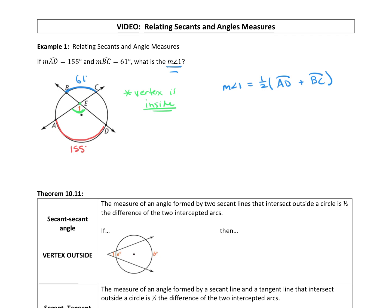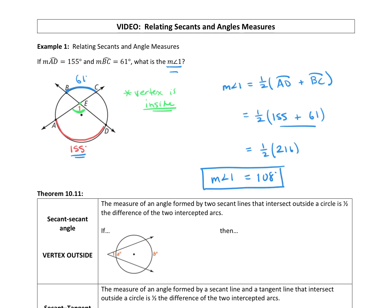Now let's plug in what we know. We're going to take one half times arc AD, which is 155, plus arc BC, which is 61. Adding those together: 155 plus 61 is 216, and half of 216 is 108 degrees. So the measure of angle one is equal to 108 degrees.